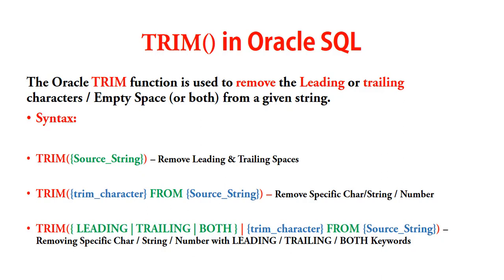Let's look at the syntax of the Trim function. For convenience, I have given three different syntaxes. The first syntax: when we want to remove leading or trailing spaces, we give our source string inside the Trim function. The second syntax: when we want to remove any special character or number, we use this form.